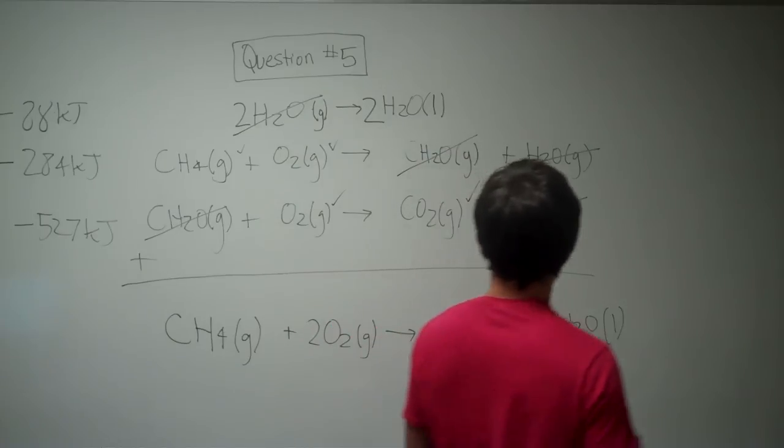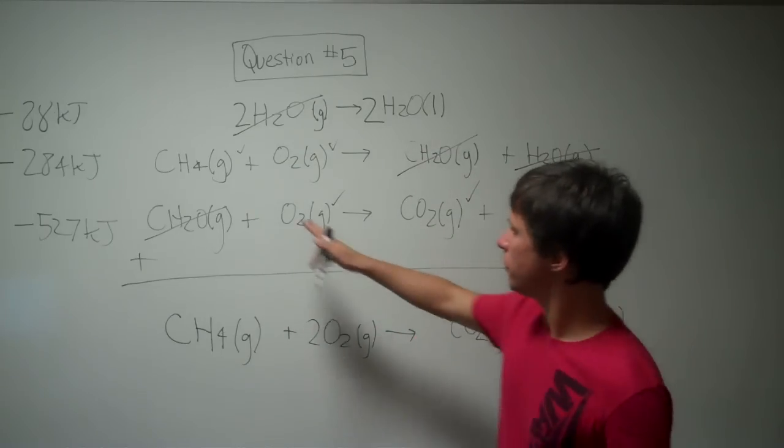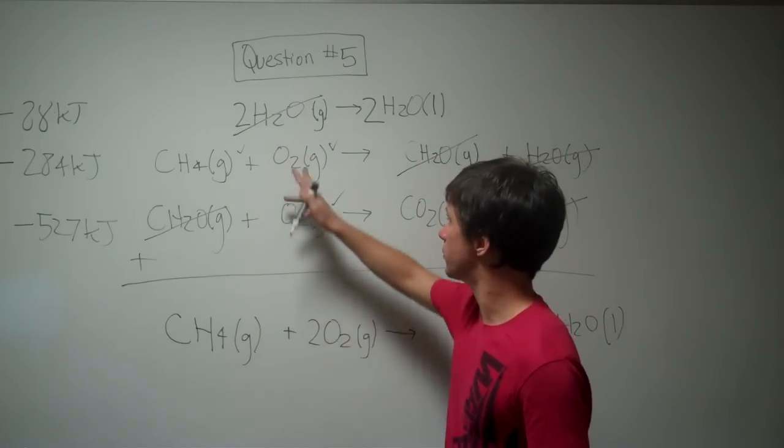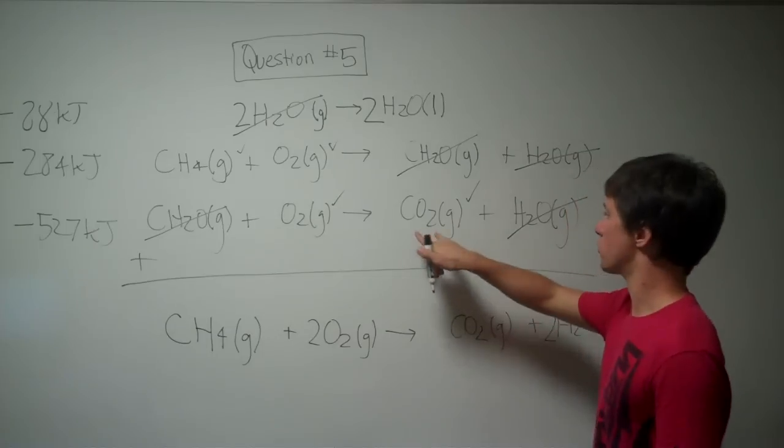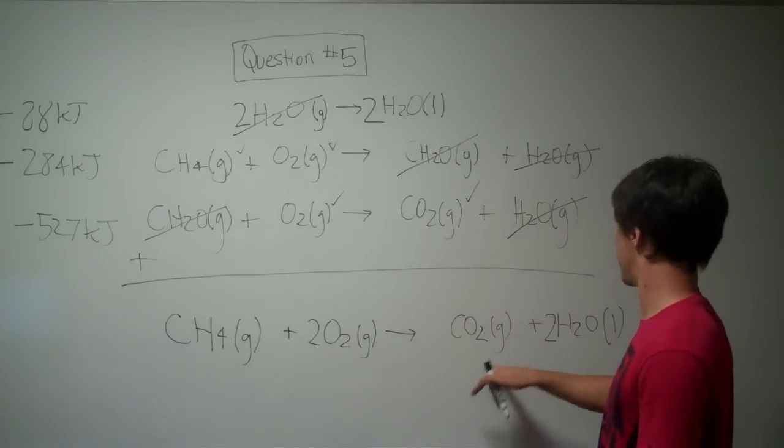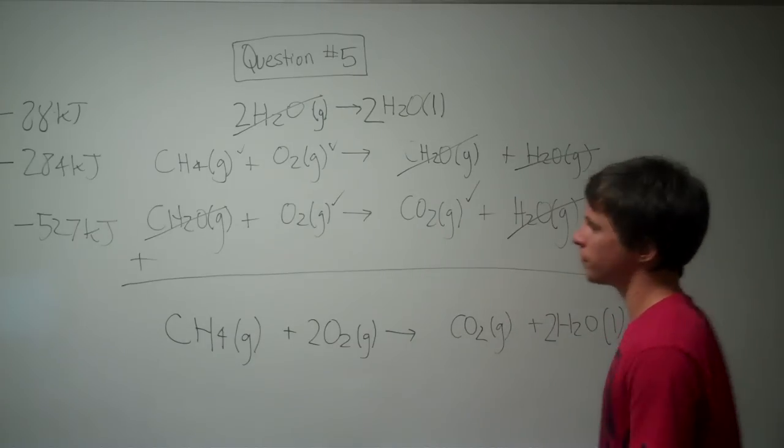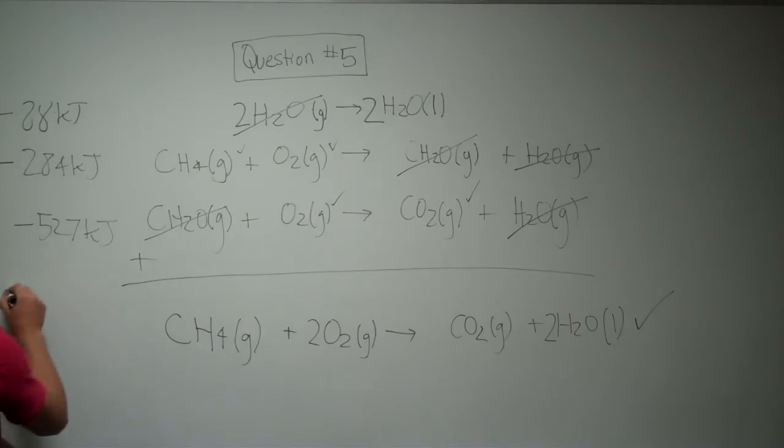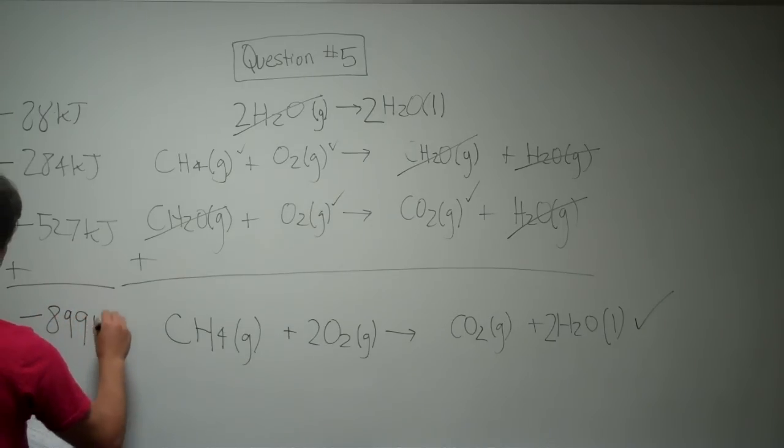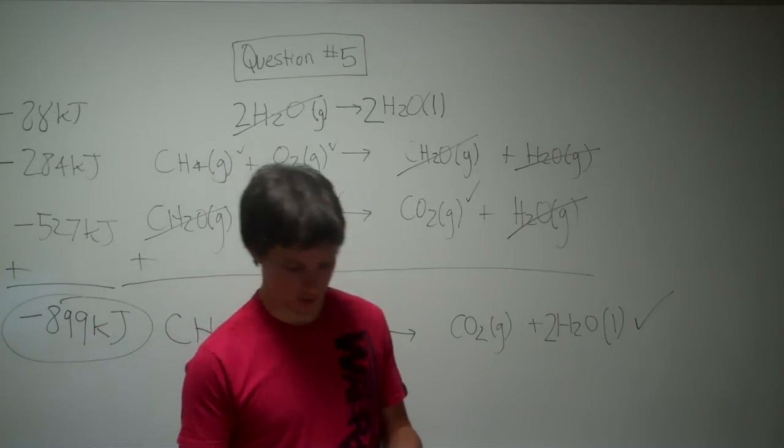Okay. So, now check it out. We have gaseous methane plus two gaseous oxygens forms one gaseous carbon dioxide plus two liquid waters. So, that's what we need. Now, we can just add up the changes in enthalpies. So, negative 88 plus negative 284 plus negative 527 adds up to negative 899 kilojoules, which is answer choice C on your test.